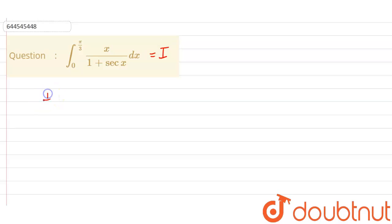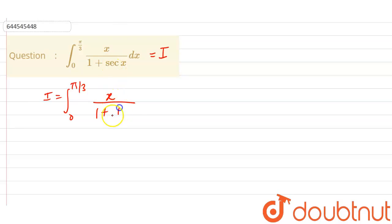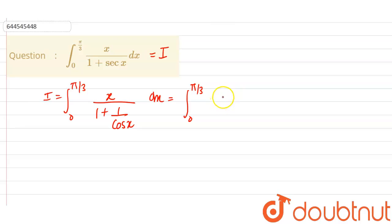So now our I can be modified. From 0 to π/3, if we convert secant in terms of cos, so it is 1/cos x. So now it is integral from 0 to π/3, which can be rewritten as x·cos x when we take LCM, divided by (cos x + 1) dx.